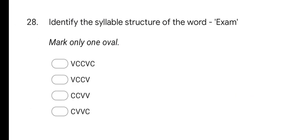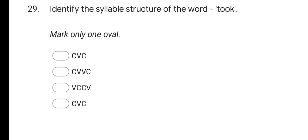Next question: identify the syllable structure of the word 'exam'. The structure is vowel, consonant, consonant, vowel, consonant — so VCCVC is the correct syllable structure. Identify the syllable structure of the word 'took'. That is CVC — consonant, vowel, consonant. This is the correct syllable structure of this word.